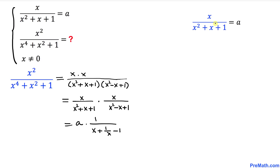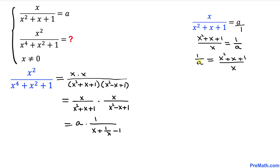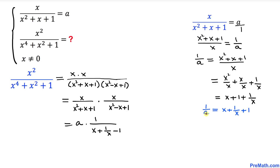Now let's focus on the original equation. We have a fraction on the left, so I'll put 1 underneath a on the right, then flip both sides. Flipping gives (x² + x + 1)/x = 1/a. Splitting the left side: x/x + x/x... simplifying gives x + 1 + 1/x = 1/a. So 1/a = x + 1/x + 1.